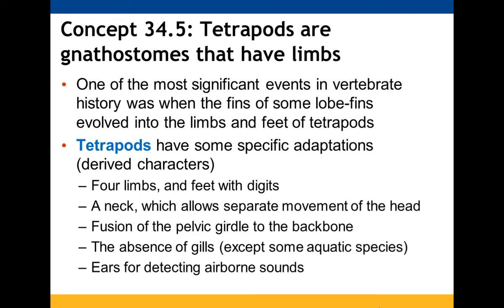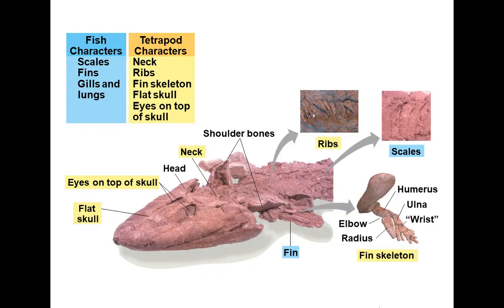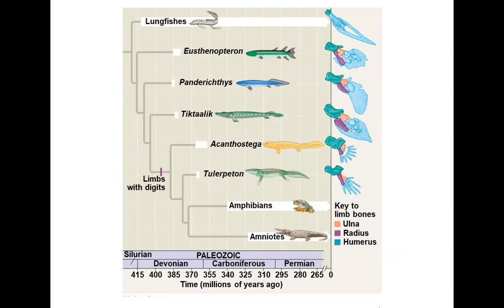Tetrapods are the group that have limbs with digits. When some lobe fins evolved into limbs and feet, the broad derived characters include limbs with digits, a neck, as well as the fusion of the pelvic girdle to the backbone, no more gills for aquatic breathing, and ears able to detect sound. Early tetrapods had both fins and gills but also had ribs and a neck — they could not yet fully walk on land. This transition was first seen around 375 million years ago.